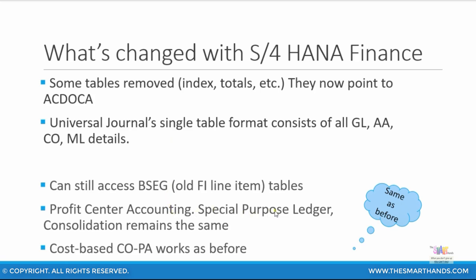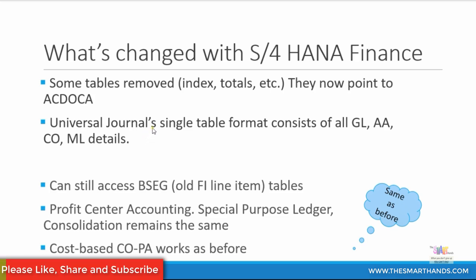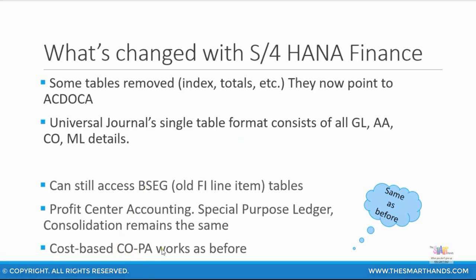Profit center accounting, special purpose ledger, and consolidation still remain the same. However, there is one major change with regard to controlling in the universal journal entry table: you will see account-based COPA. We will cover COPA in detail in later presentations, but just to give an insight — the universal journal entry table will have account-based COPA only. For costing-based COPA, you can still use the legacy tables and run reports. But with S4HANA Finance, the recommended approach is now to use account-based COPA, as it allows for more detailed line item analysis.